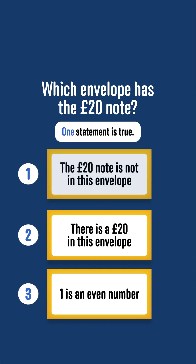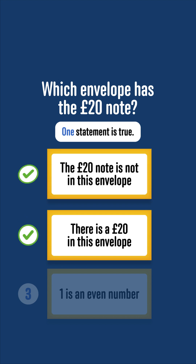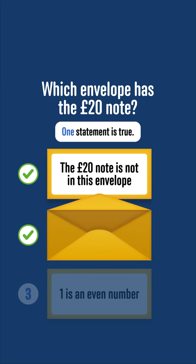Now suppose the 20-pound note is in envelope 2. Then the statement on envelope 2 is true, but the statement on envelope 1 is also true, because the 20-pound note is not in envelope 1. But only one statement can be true, so the £20 note can't be in envelope 2.